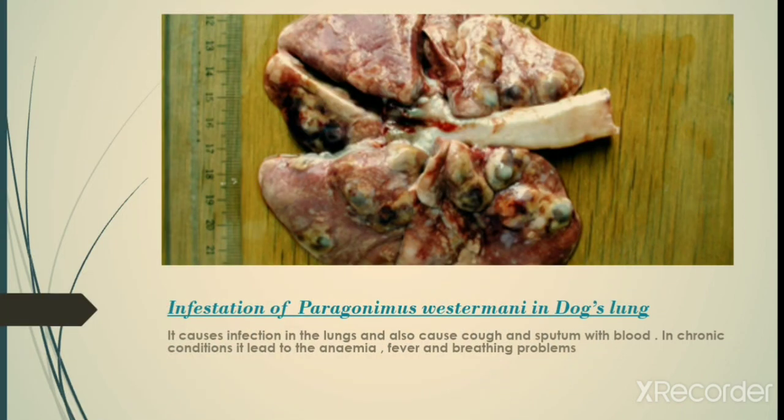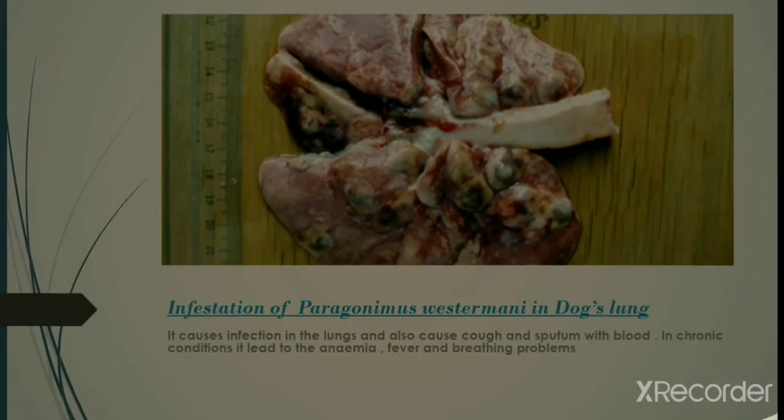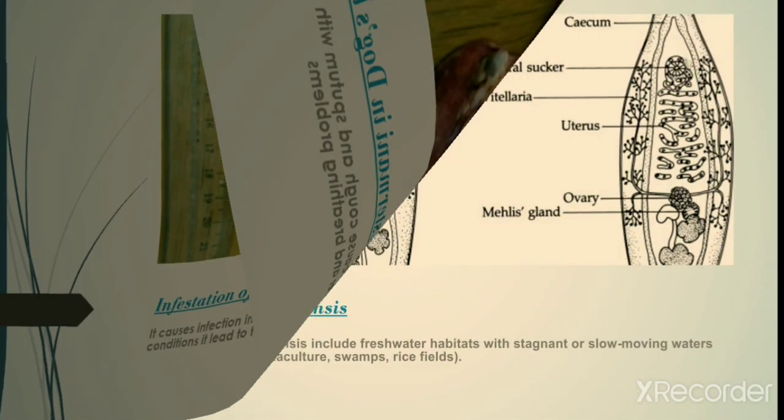Infestation of Paragonimus westermani in a dog's lung — here we can see it causes infection in the lungs and also causes cough and sputum with blood. In chronic conditions it leads to anemia, fever, and breathing problems.